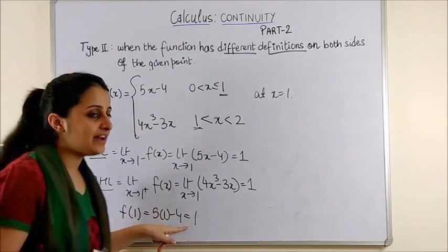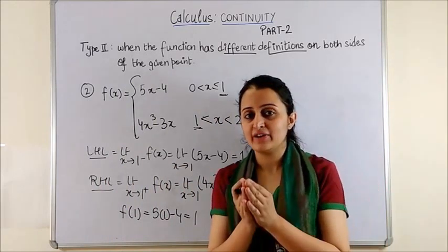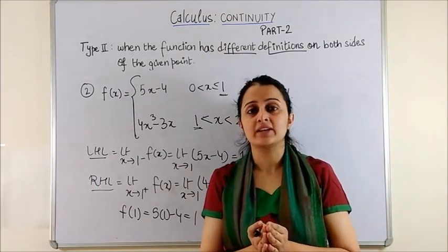So, since LHL, RHL and value of the function at 1, all three coincide. Therefore, the function is continuous at x equal to 1.